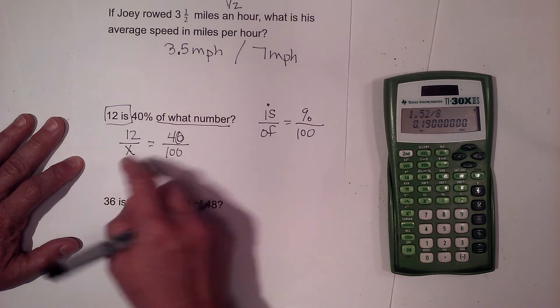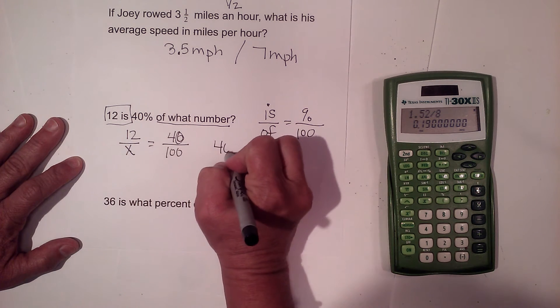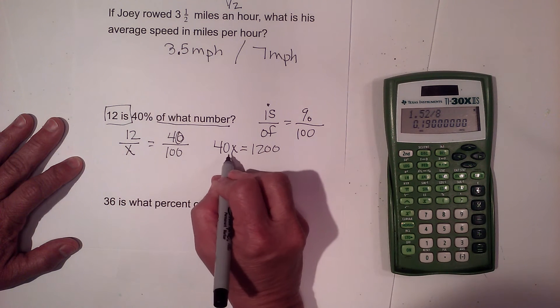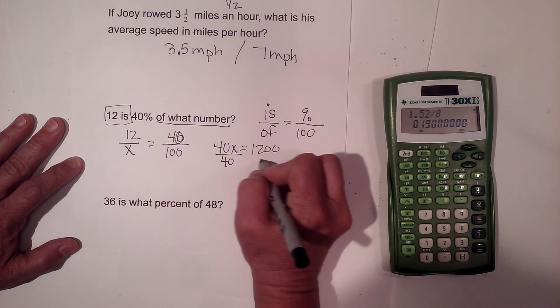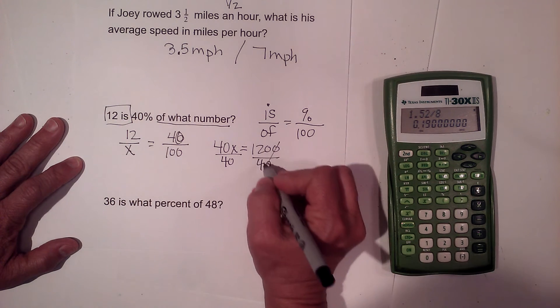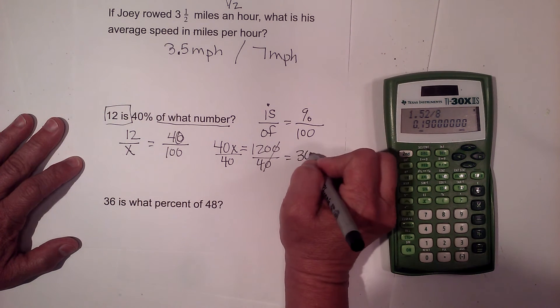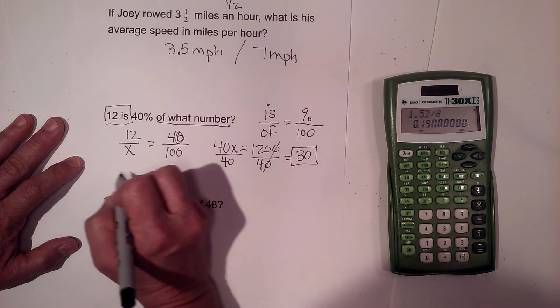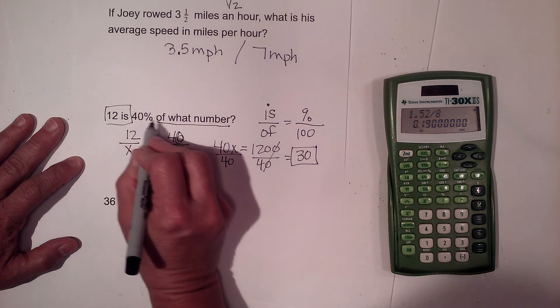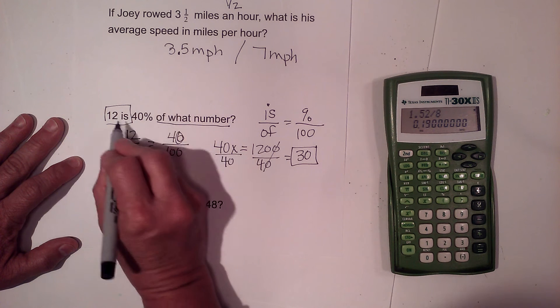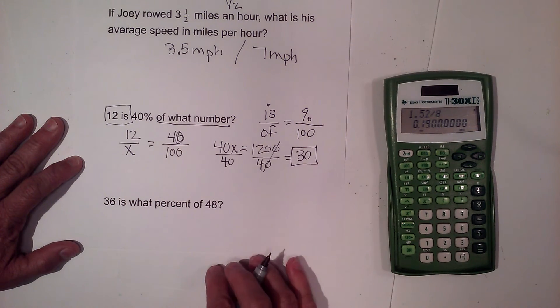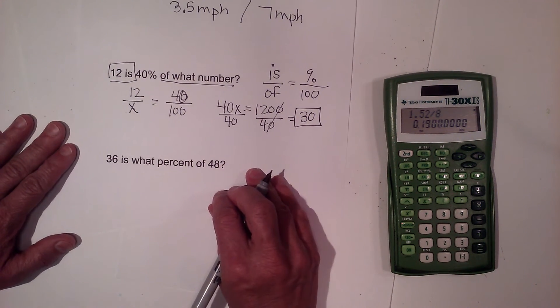So 12 is going to go on top of what number? That's our unknown, so I'm going to put that on the bottom as x. Now what's my percent? 40. So I'm going to put 40 over 100. Now I can use my cross products. So 40 times x is 40x, 12 times 100 is 1200. When you have 40 times x to undo that, I'm going to divide. So 40 goes into 1200 and that's 30 times. So 12 is 40% of 30.